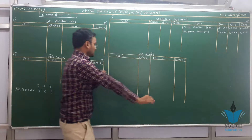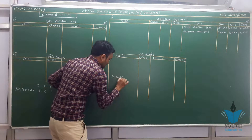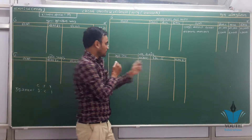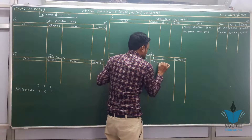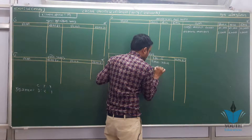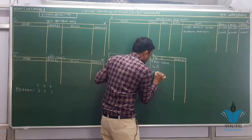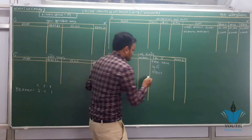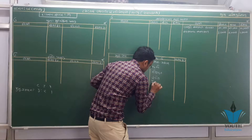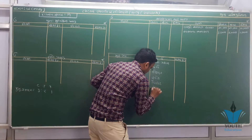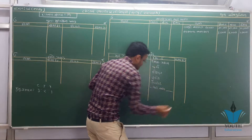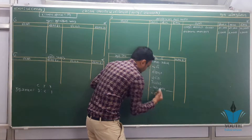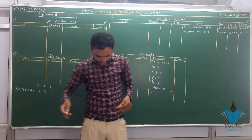ત્યાર બાદ લેણદારો, મૂડી, દેવા ભાગ, લેણદારો. સૌ પ્રથમ જમીન-મકાન, યંત્રો, રોકાણ, દેવાદાર માઈનસ ગાળખાદ અનામત, સ્ટોક, દેવાદાર માઈનસ ગાળખાદ અનામત, અને રોકડ ખાતાની ઉધાર બાજુ.